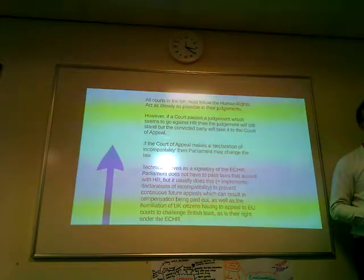All courts in the UK must follow the Human Rights Act as closely as possible in their judgments. However, if a court passes a judgment which seems to go against human rights, the judgment will still stand, but the convicted party will take it to the Court of Appeal. If the Court of Appeal makes a declaration of incompatibility, then Parliament may change the law. Technically, even as a signatory of the ECHR, Parliament does not have to pass laws that accord with human rights, but it usually does and implements declarations of incompatibility to prevent continuous future appeals which can result in compensation being paid out.